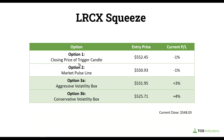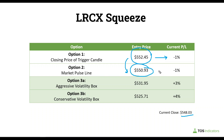Option one was using the closing price of the trigger candle — that was 552.45 — and your current P&L using our current close price of 548.03 is that you're down one percent. Option two, using the market pulse line, gives you an entry at 550.93, but you're still down around one percent.